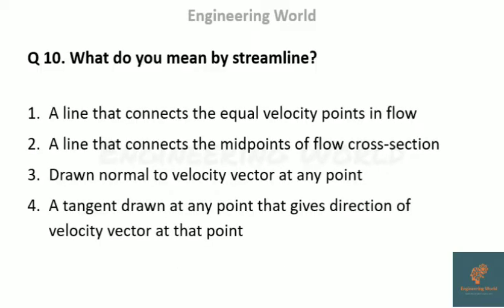The next question: what do you mean by a streamline? Streamlines are lines such that a tangent drawn at any point gives the direction of the velocity vector at that point. If we draw a tangent to a streamline, it gives the direction of the velocity vector. The correct answer is: a tangent drawn at any point that gives the direction of the velocity vector at that point.